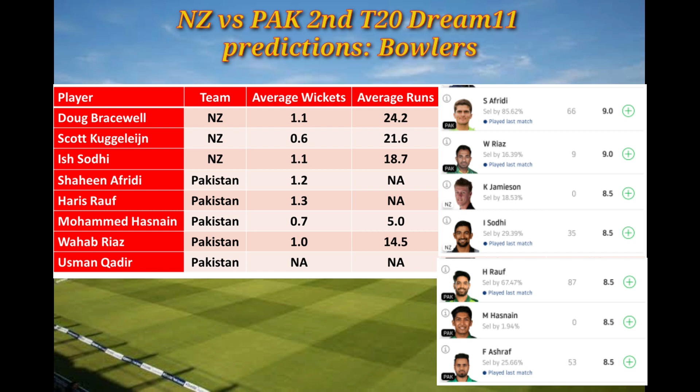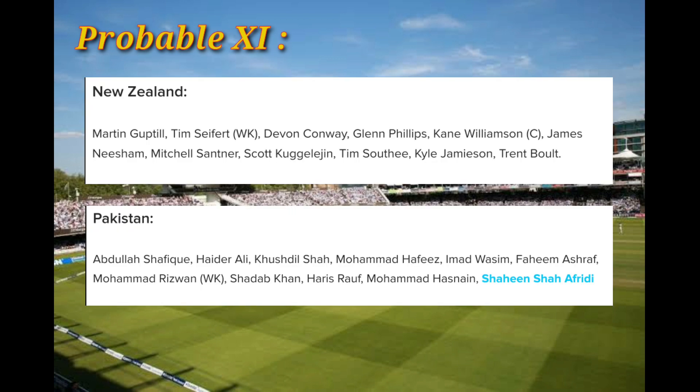For bowlers, you can see the average wickets taken and runs given, and the right-side table shows last match Dream11 points. The highest is Rauf with 87 Dream11 points, next is Shaheen Afridi with 66 Dream11 points, and Shadab got 35 points.